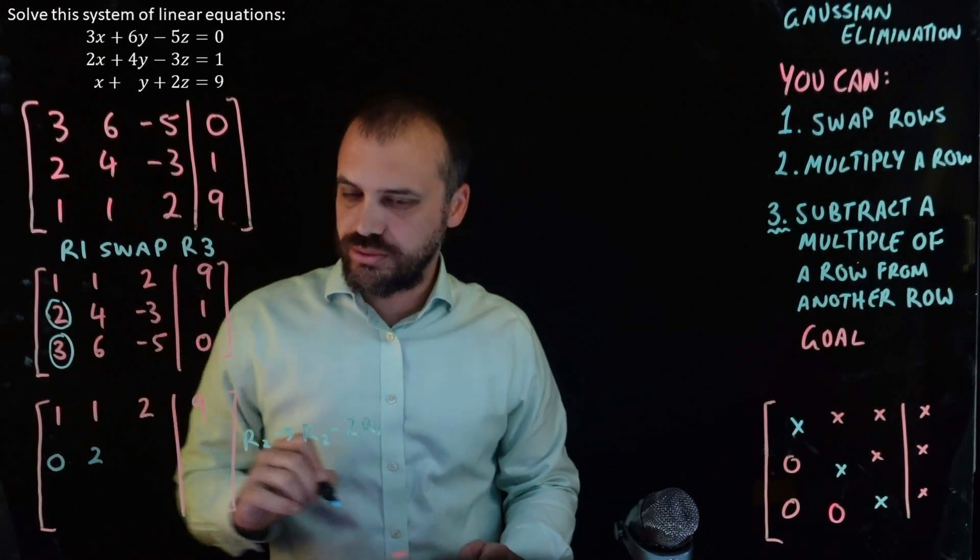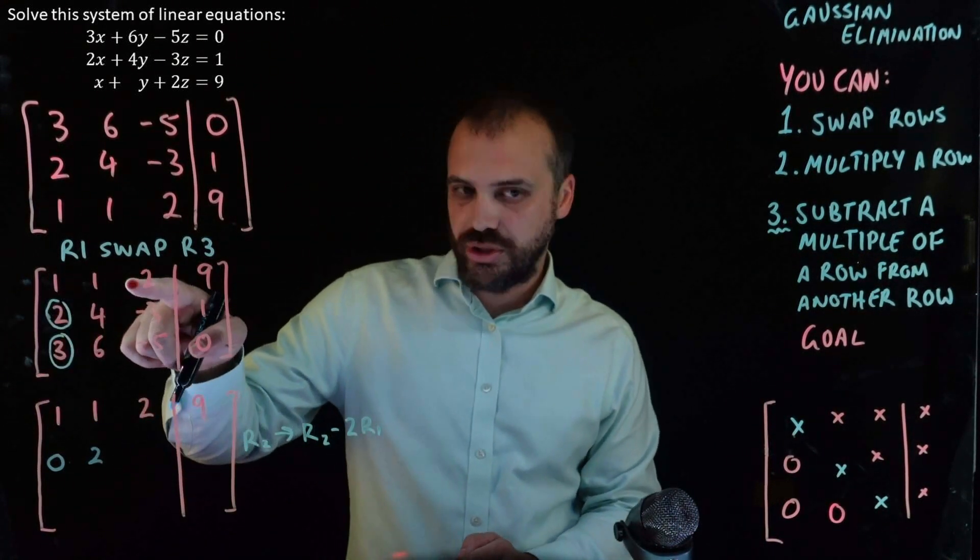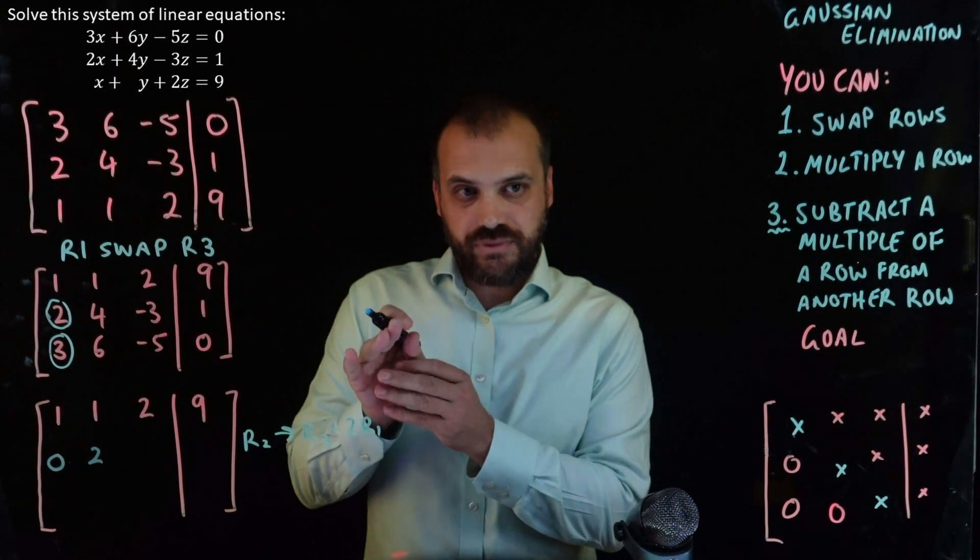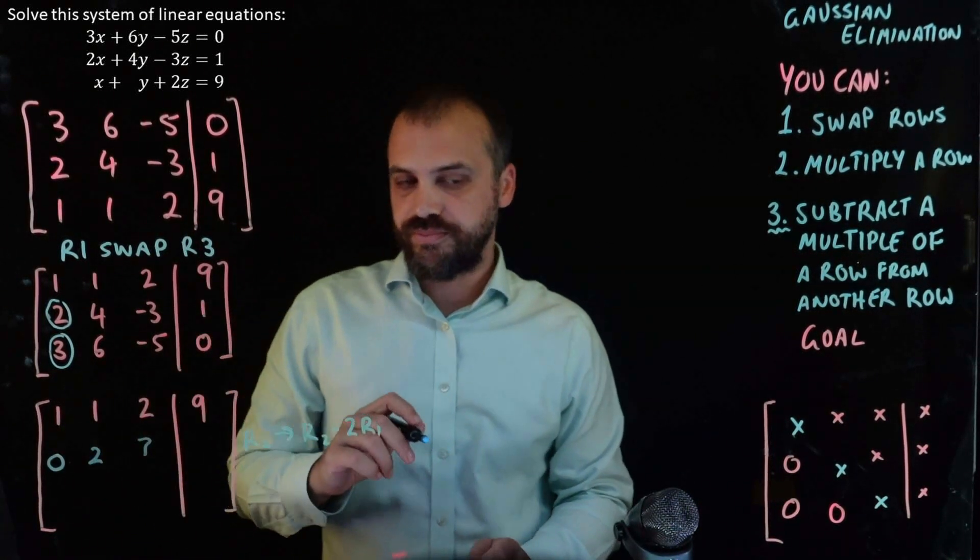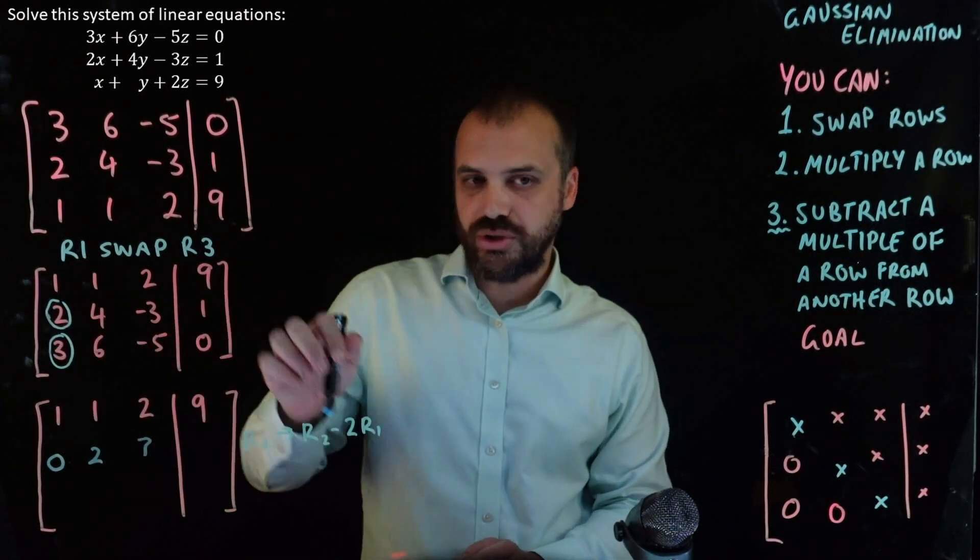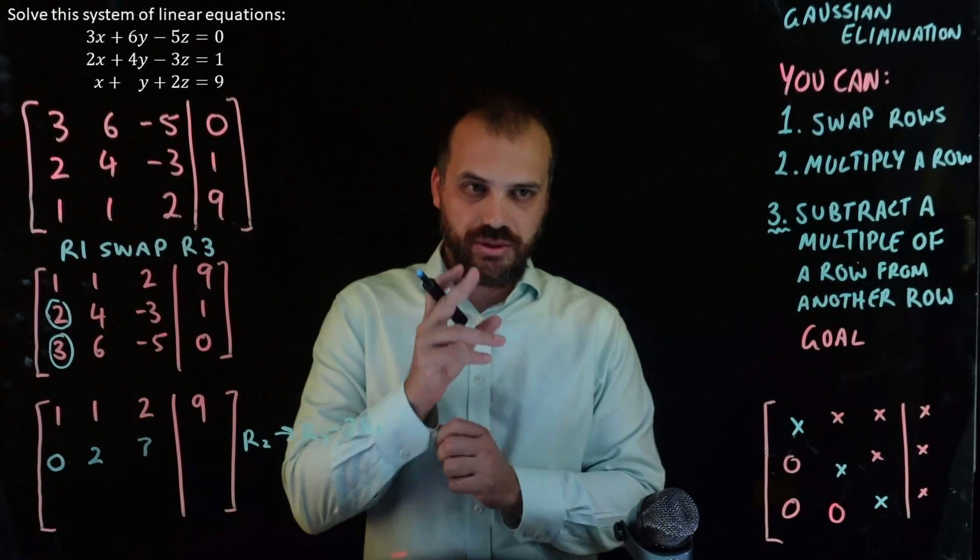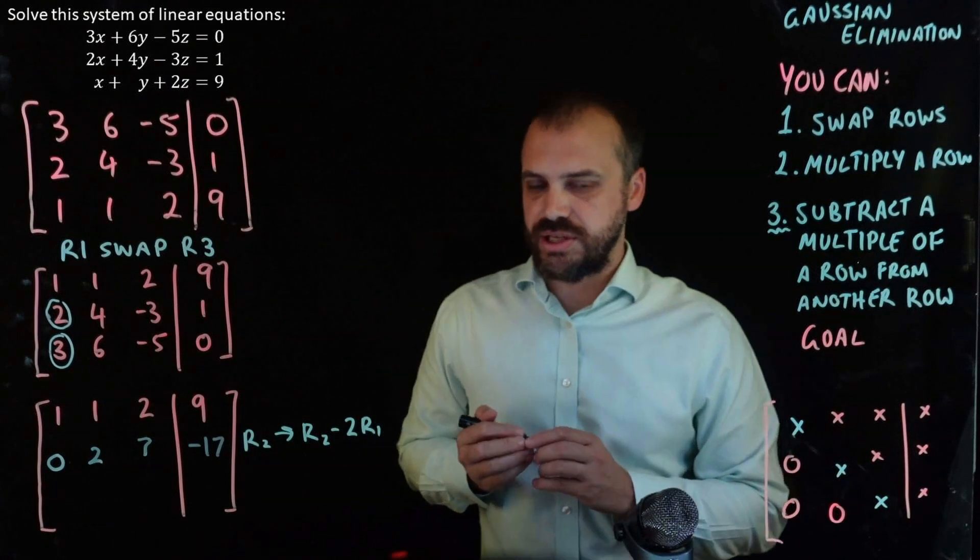Negative three minus two times two is negative three minus four, which is seven. And one minus two times nine, which is 18. One minus 18 is negative 17.